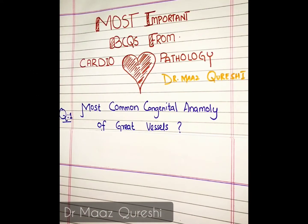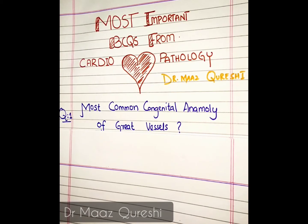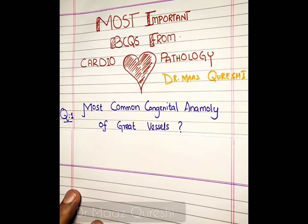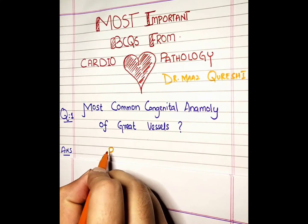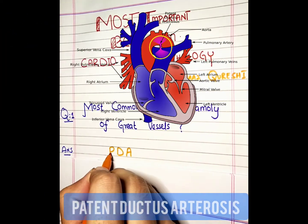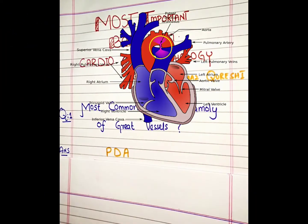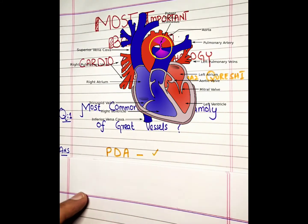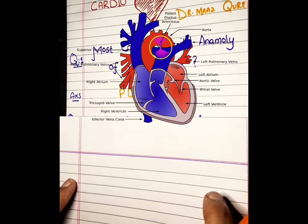Our first MCQ: What is the most common congenital anomaly of the great vessels? Whenever you get this question, just go with PDA — Patent Ductus Arteriosus — which is a very commonly repeated MCQ.